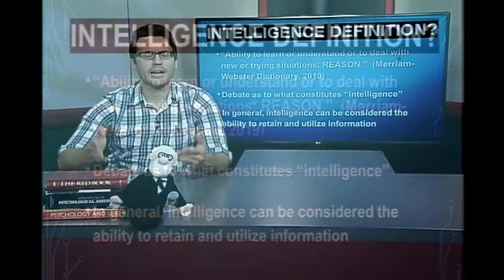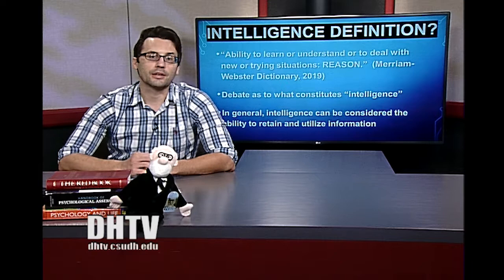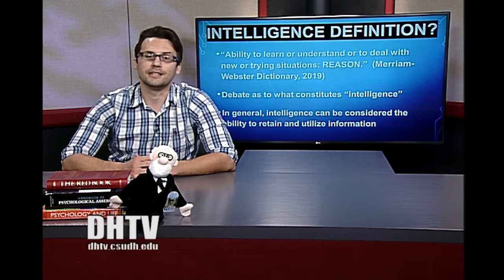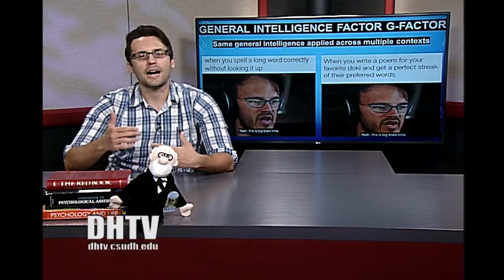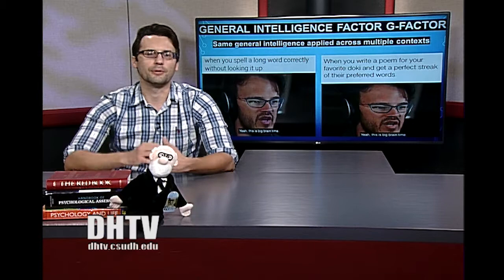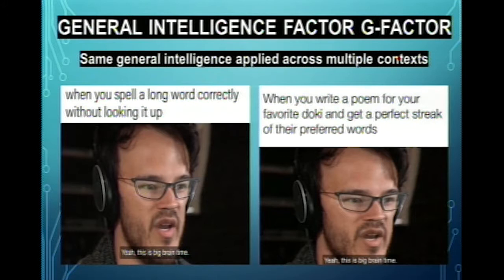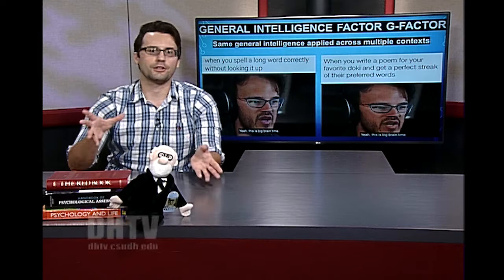The first and probably earliest theory is from Charles Spearman, who talked about general intelligence. Through a series of factor analyses — a statistical method — Spearman found that people who scored highly on one section of a cognitive test tended to score highly on another section as well, and vice versa. From this he identified what he called the g-factor, or general intelligence factor.